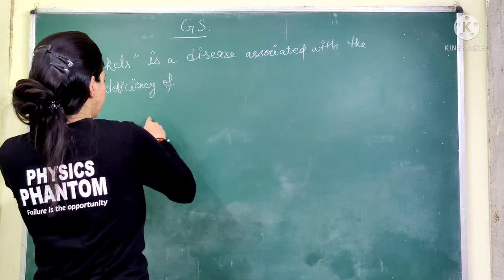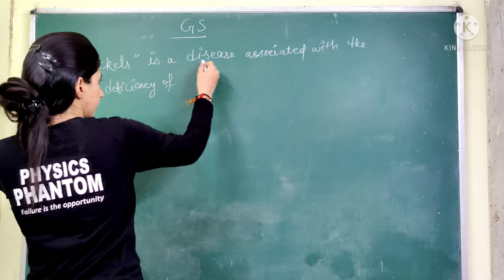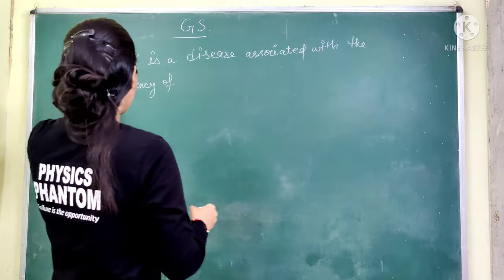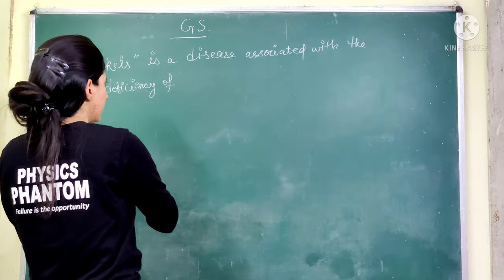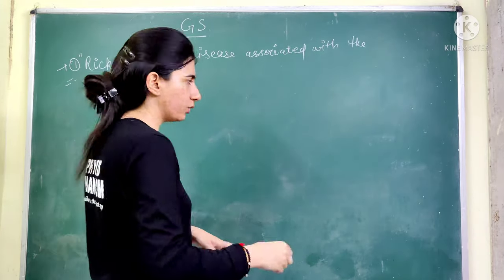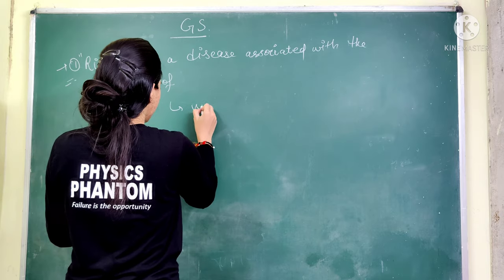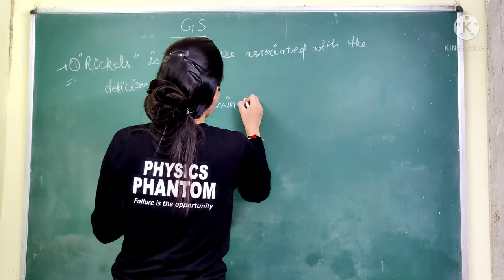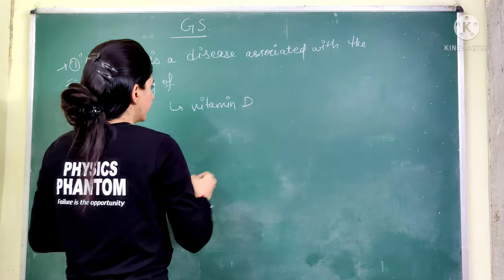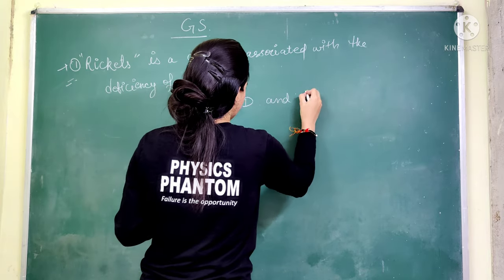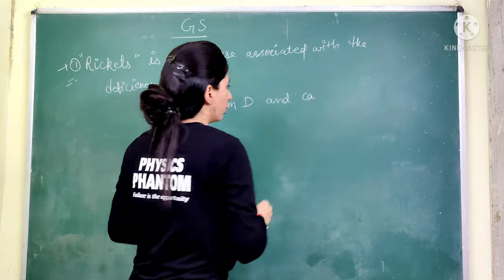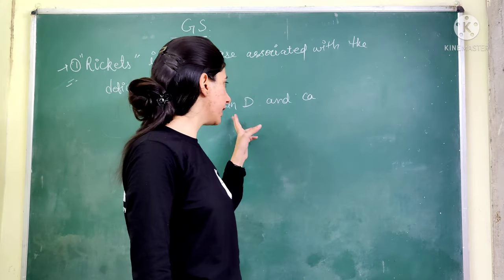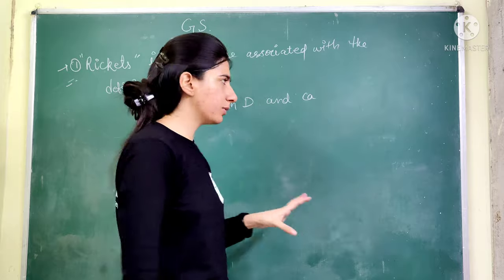As you can see on the board, the first question is: Rickets is a disease associated with the deficiency of what? The answer is Vitamin D and Calcium. In many questions there is only a Vitamin D option, but there is also a Vitamin D and Calcium option — you can write both.